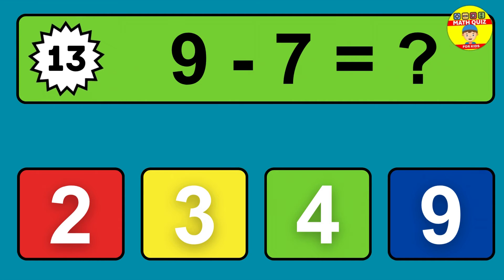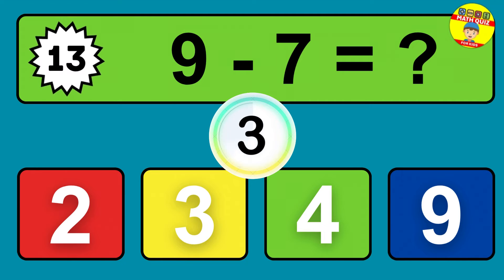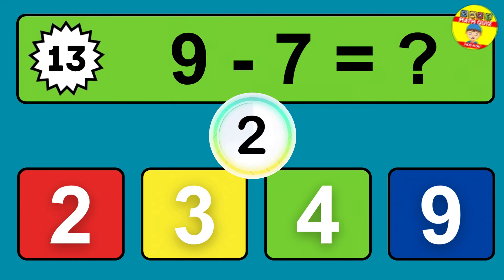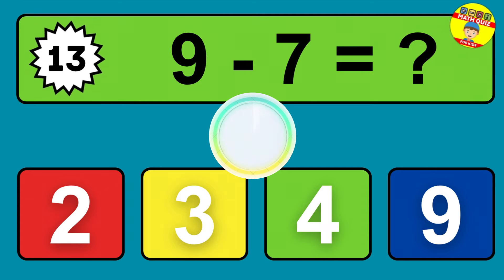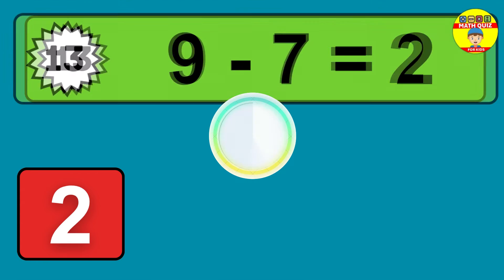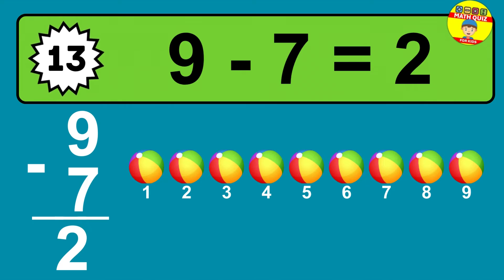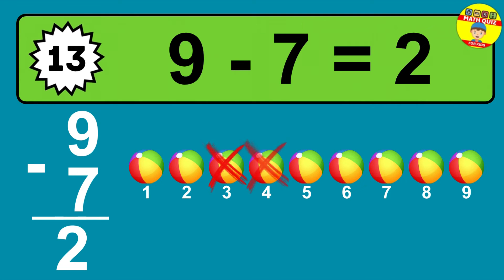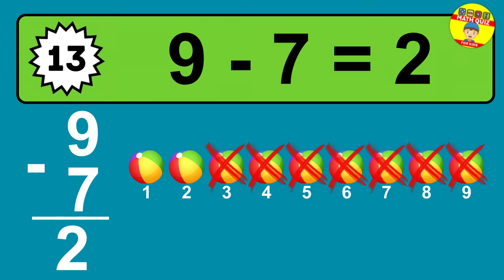Question thirteen: nine minus seven equals what? The answer is nine minus seven is two. Let's count it: one, two.